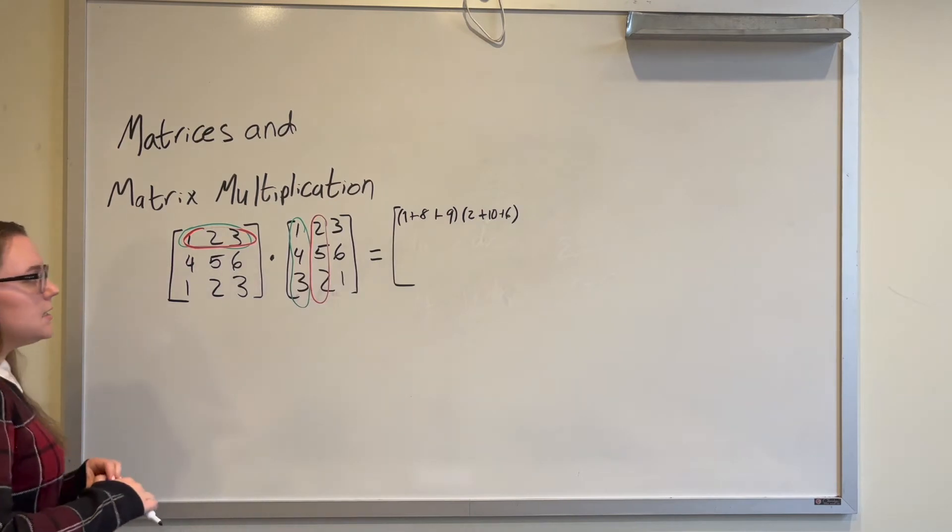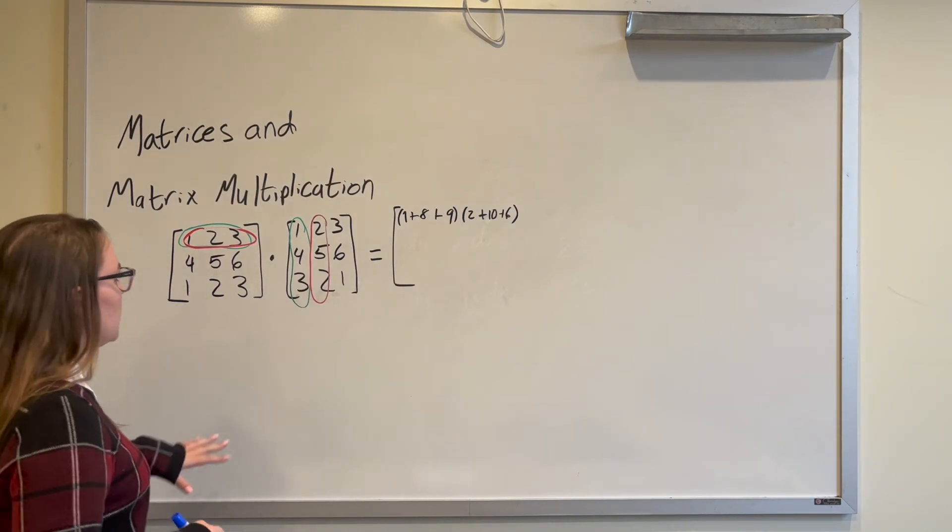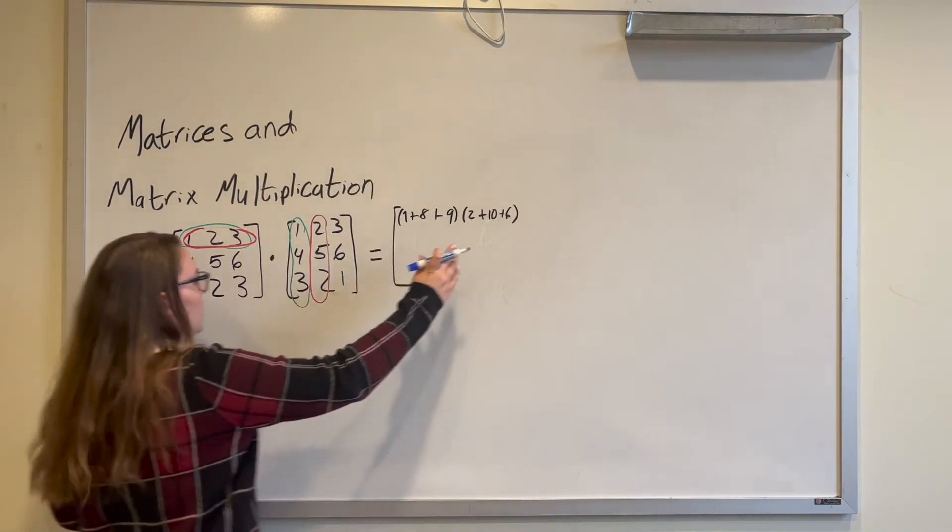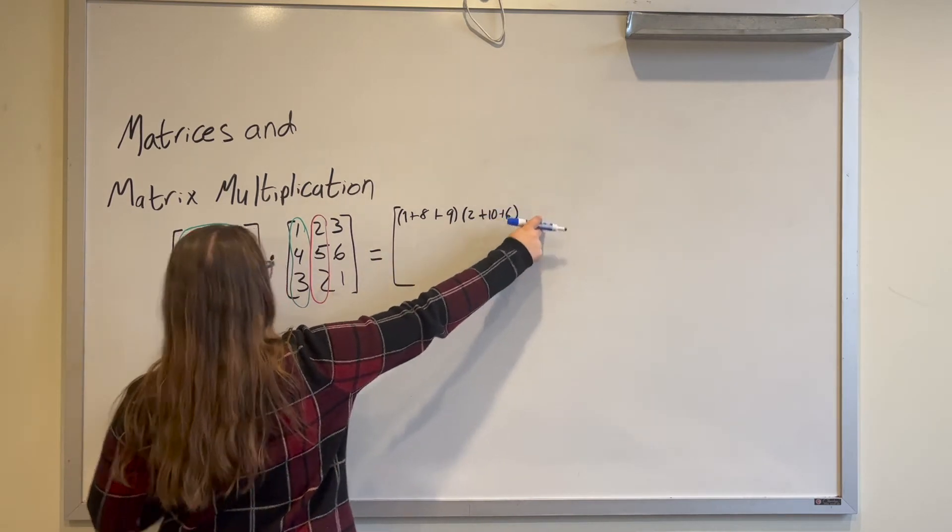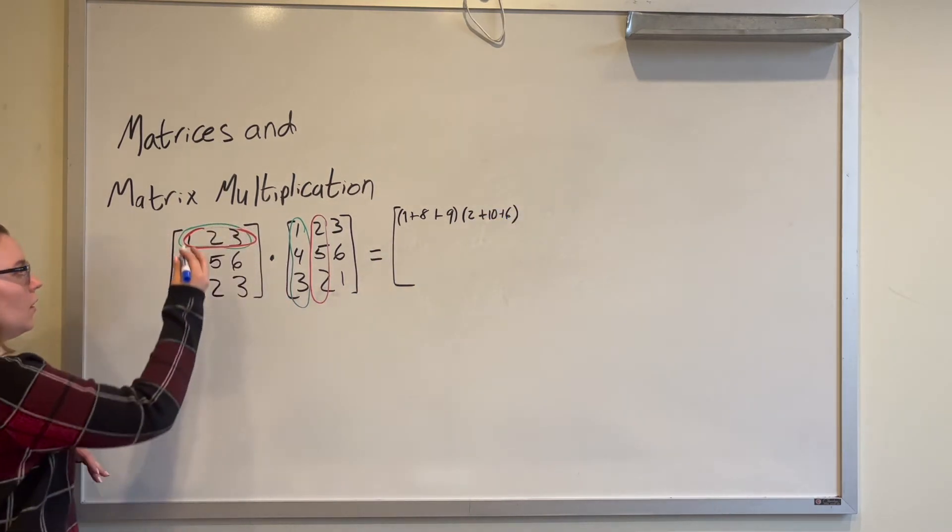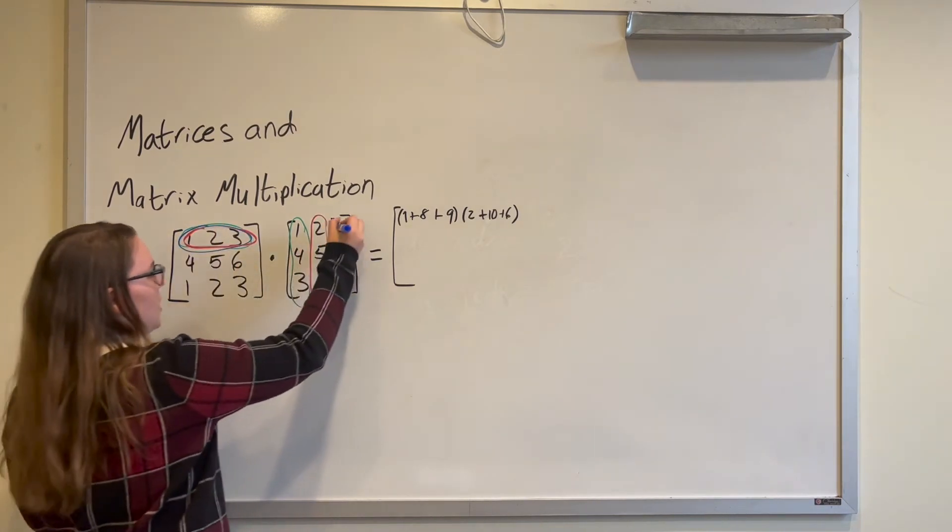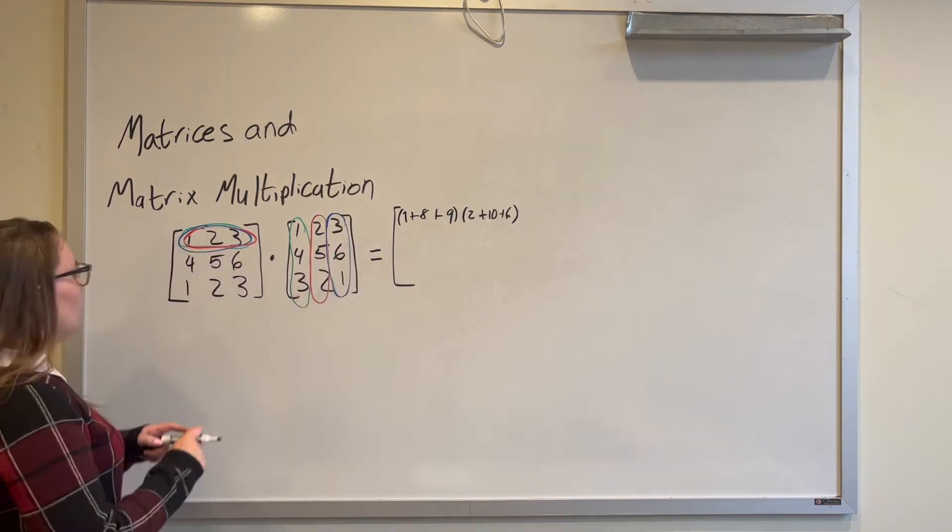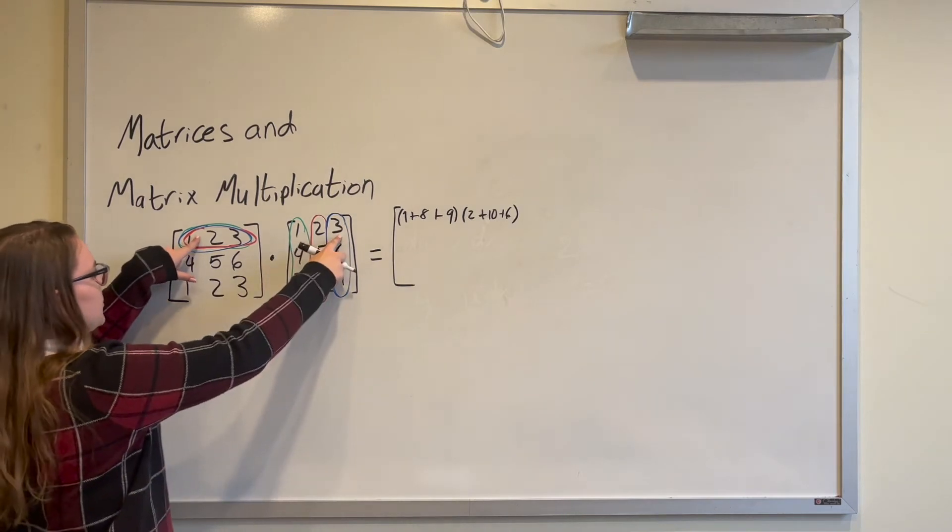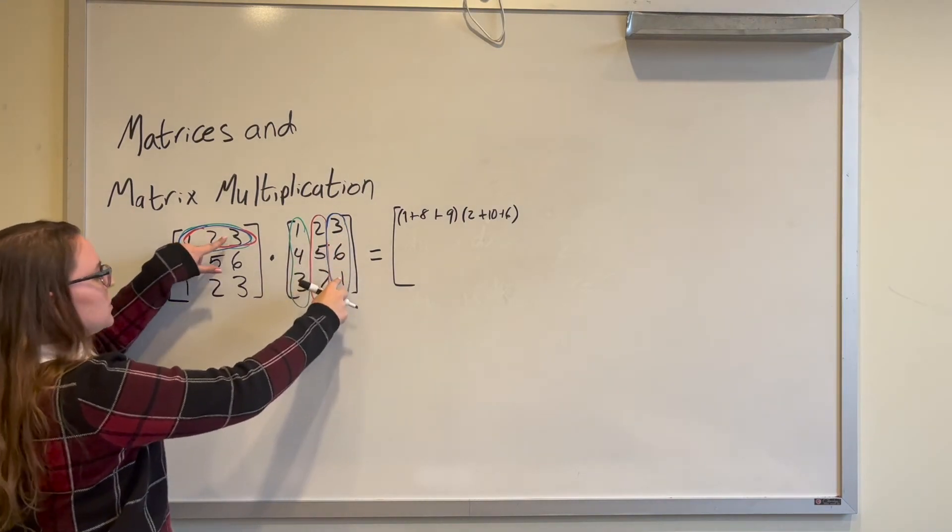And then finally to get the last value, the third value of our first row, we are going to take the first row here times the third column. We are going to do 1 times 3 plus 2 times 6 plus 3 times 1.